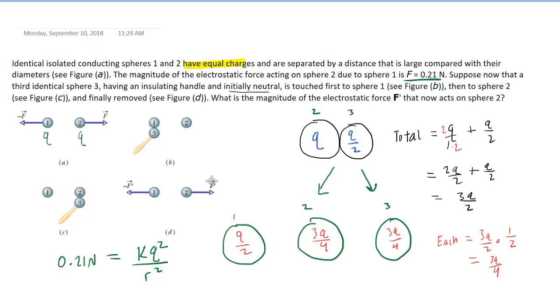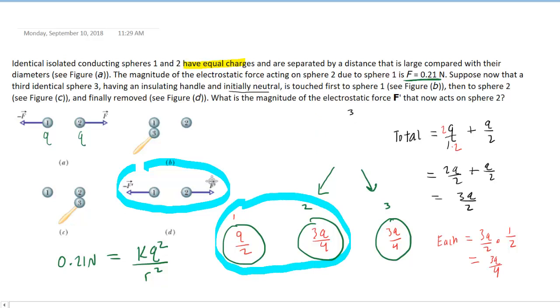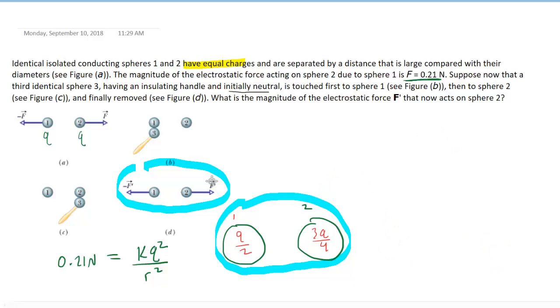Now to part D or figure D, we can see that we're bringing spheres 1 and 2 back together. So we're going to take these two spheres and analyze the new electrostatic force that exists between them. Now we can still use Coulomb's Law to figure out that force. But we will now use the new charges that are present on these spheres.